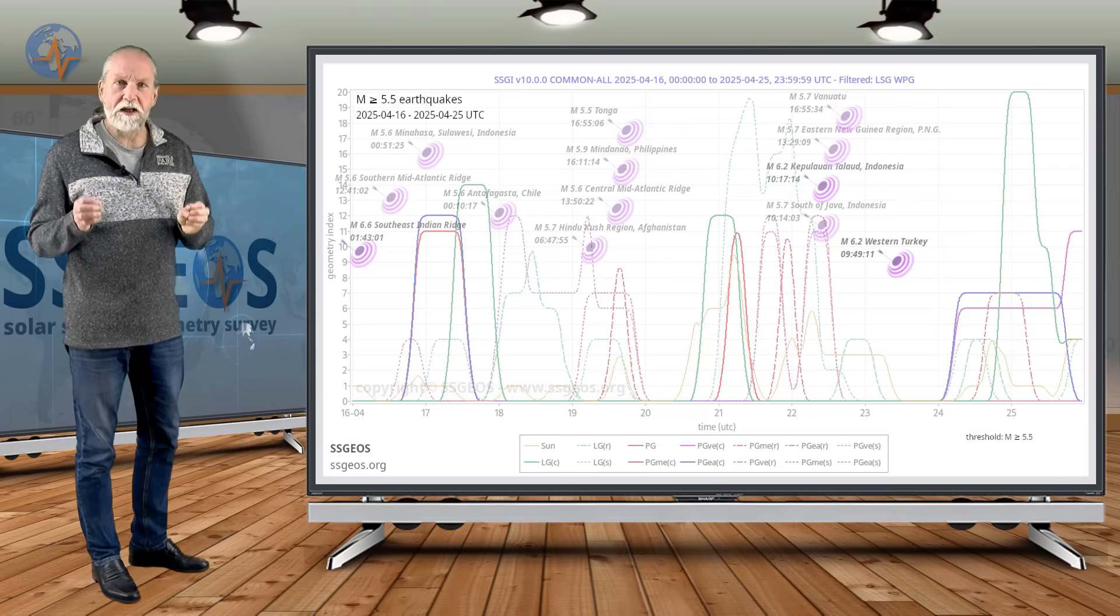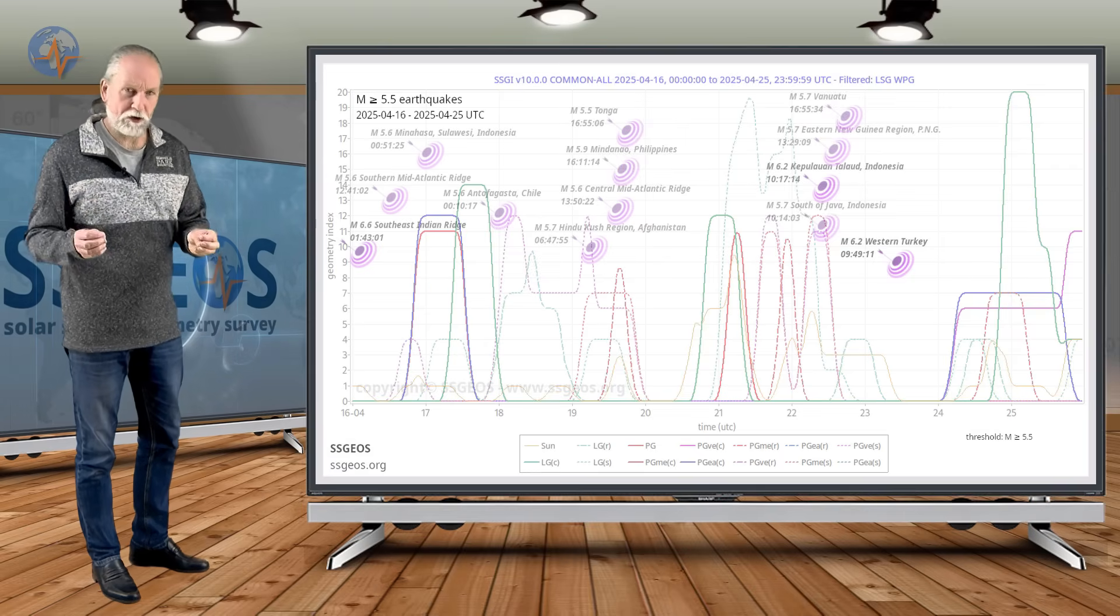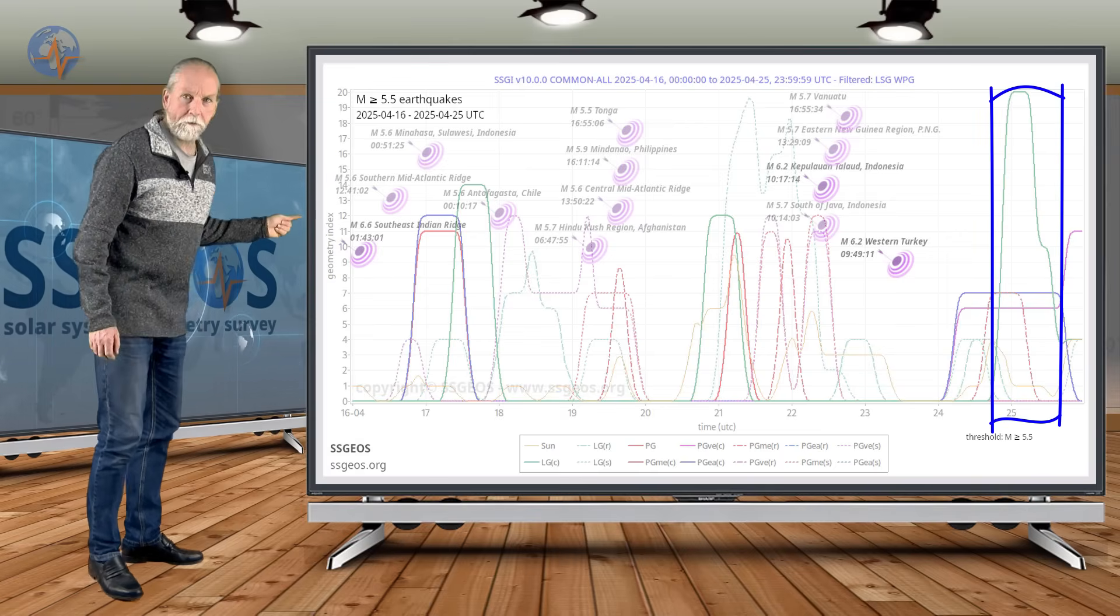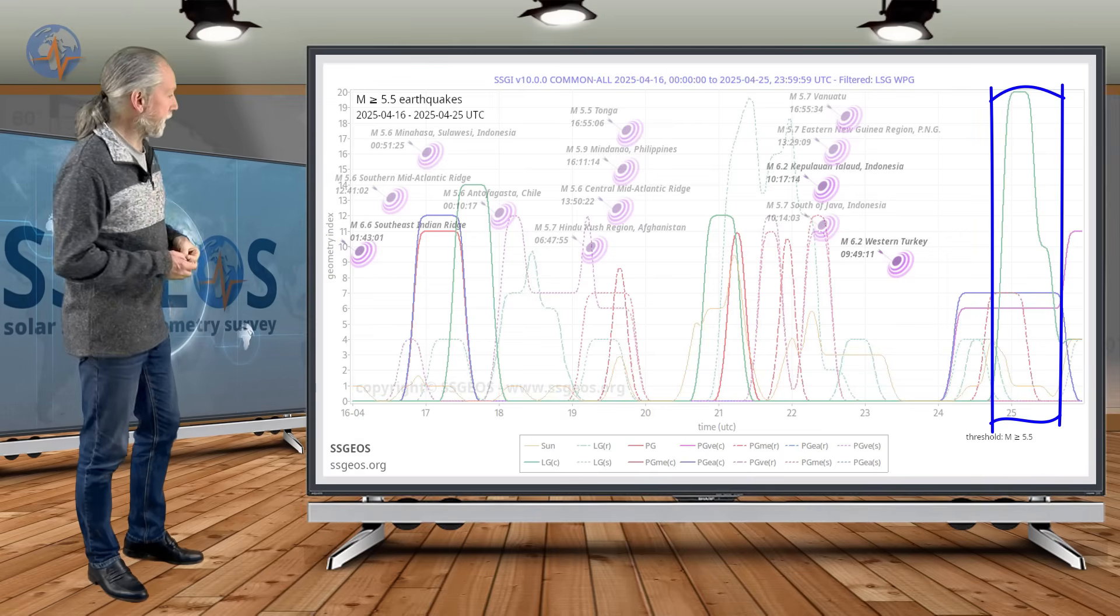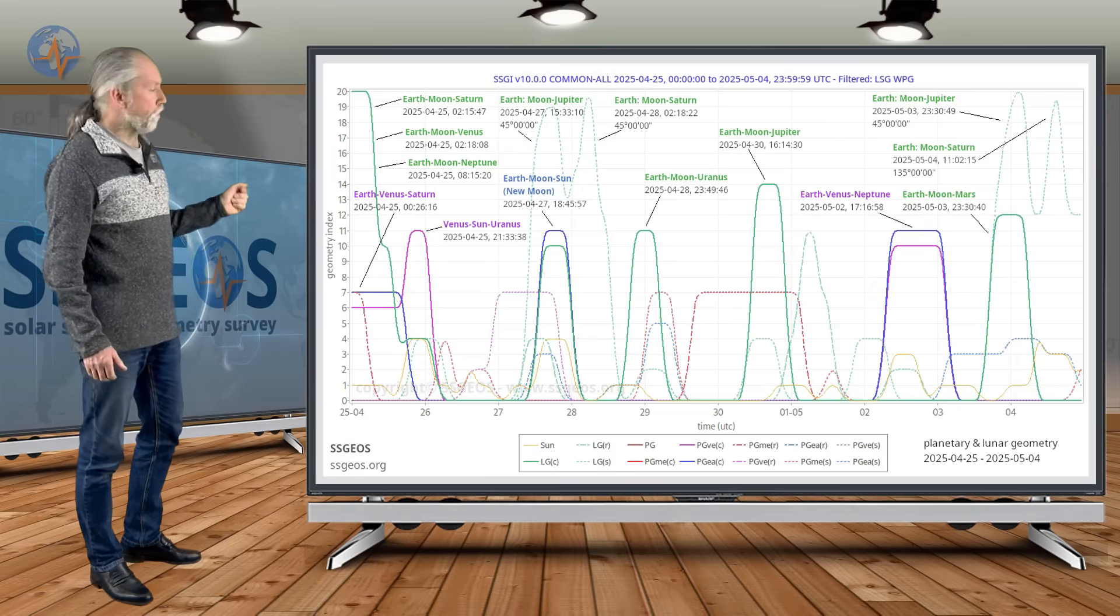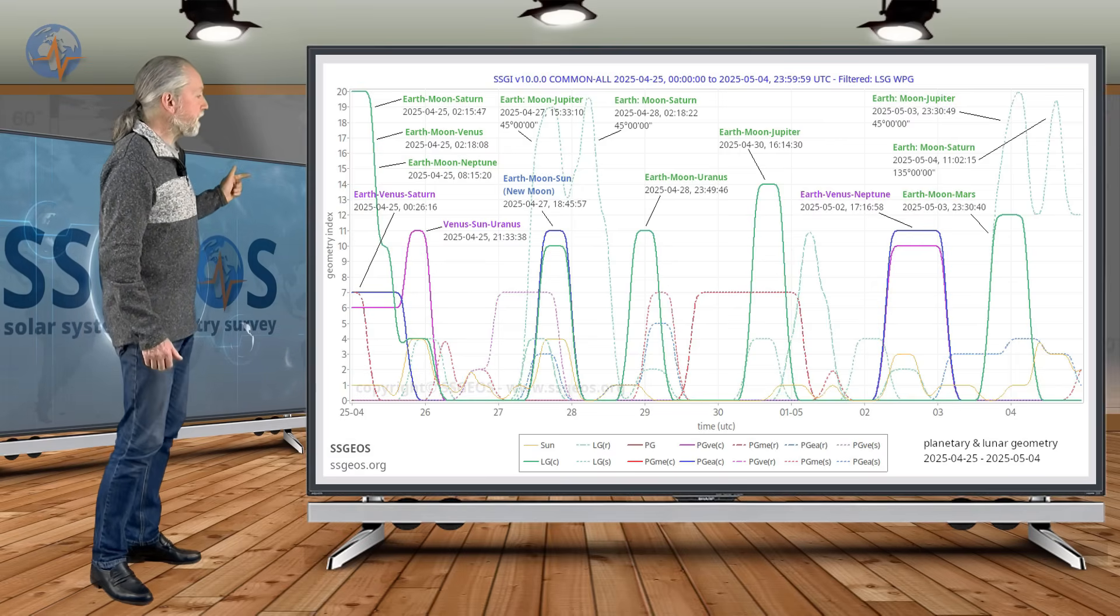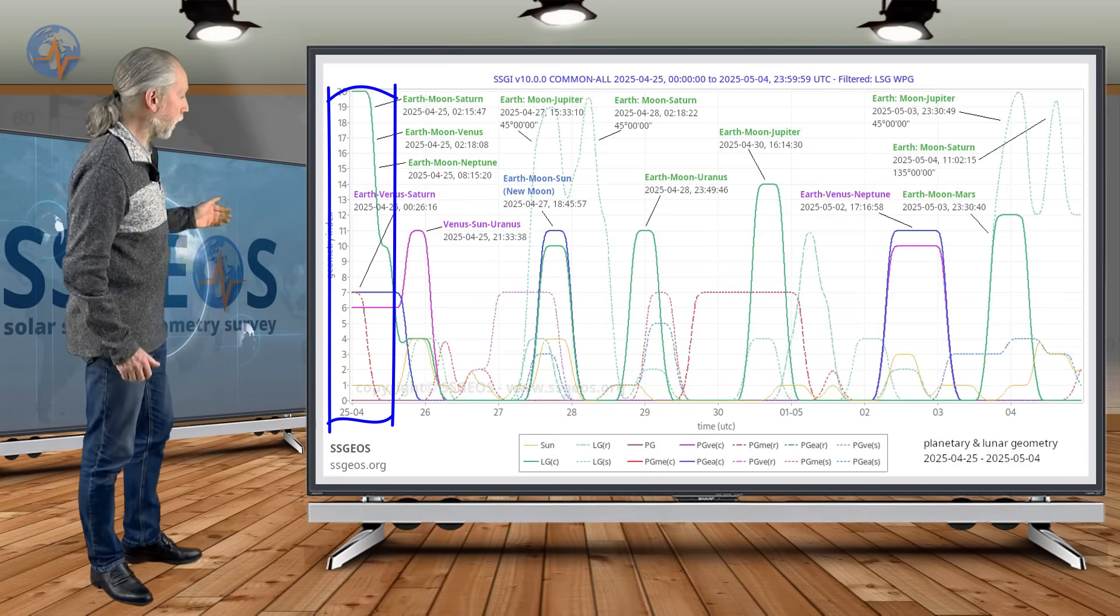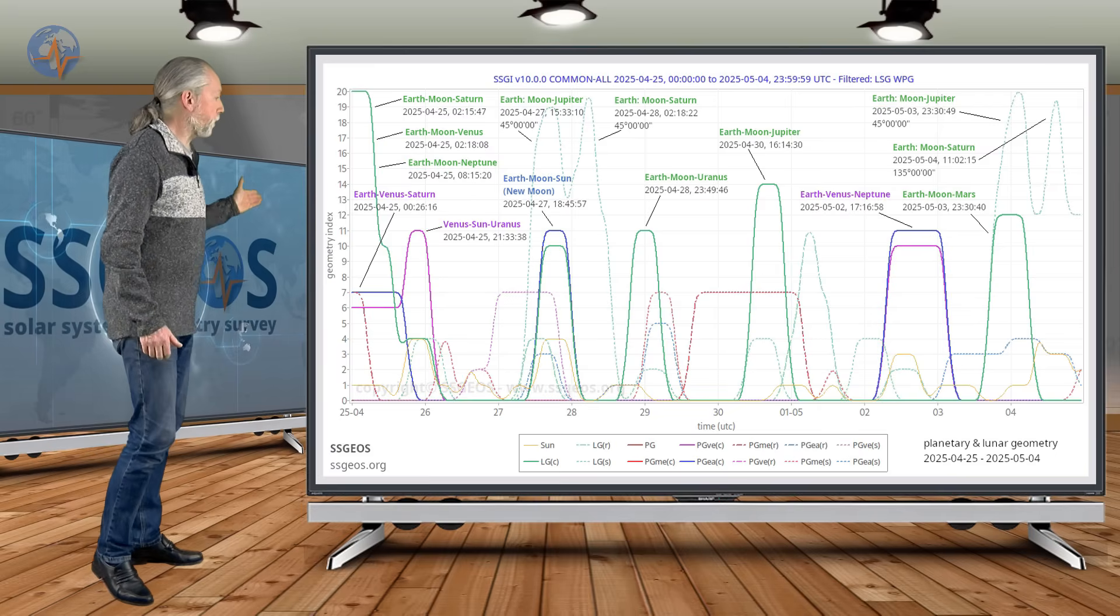Remember, stronger earthquakes tend to occur in temporal clusters. We have a high lunar peak today, and that's what we're going to discuss next, if we look at the next time frame up until the 4th of May. We see primarily lunar geometry, but there is some convergence of planetary geometry as well, and that happens today with Earth, Venus, Saturn.